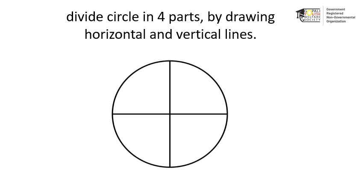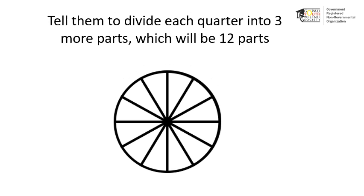Ask the student to divide the circle into 4 equal parts by using a horizontal and a vertical line. Then ask the student to divide each quadrant into 3 equal parts. When we divide the 4 quadrants each into 3 equal parts, we have a total of 12 parts of the circle.